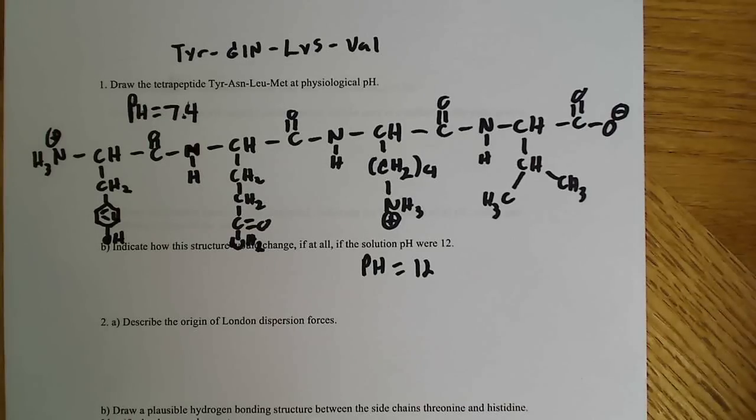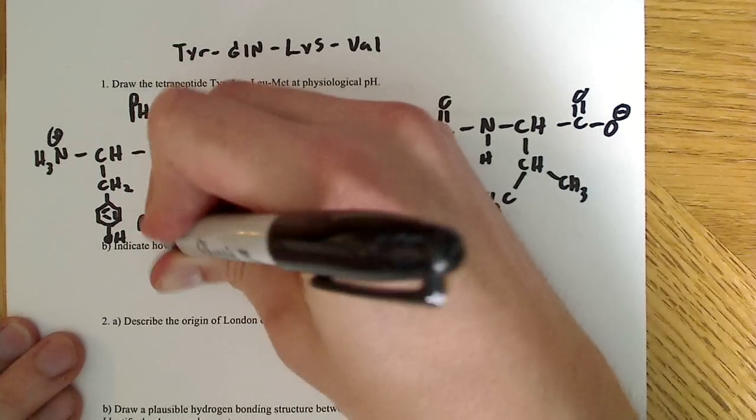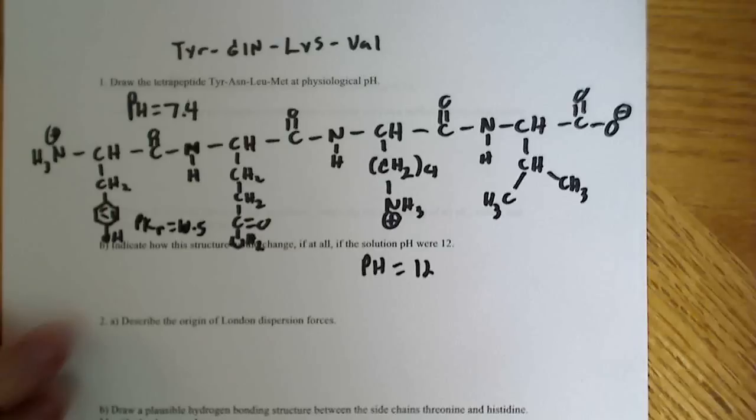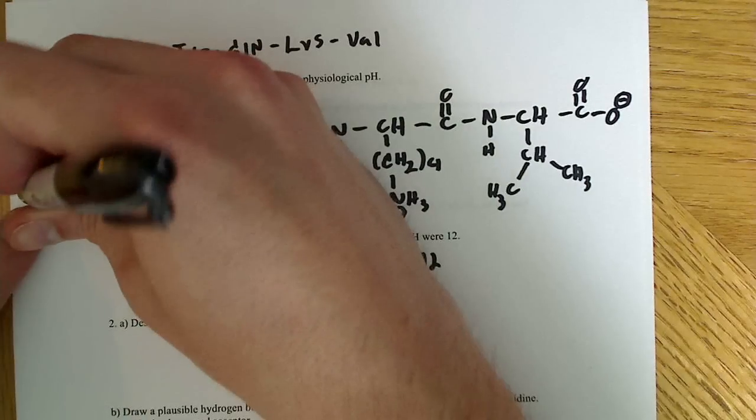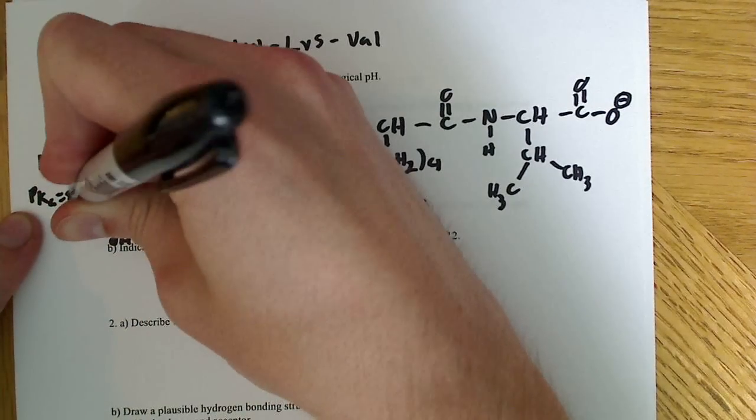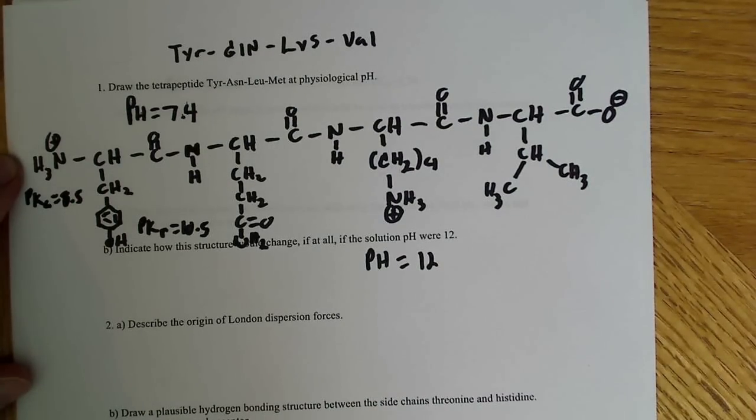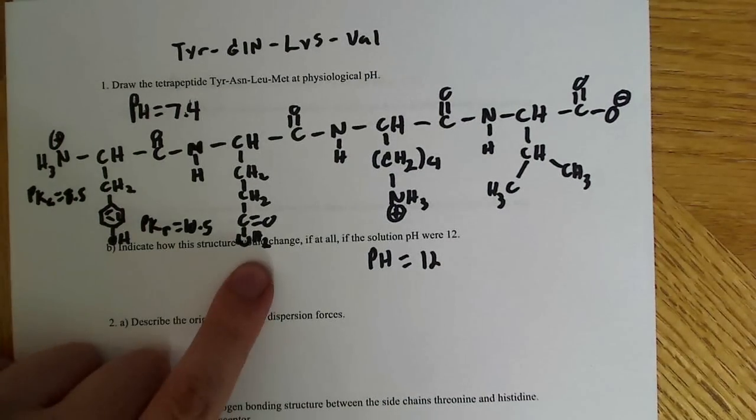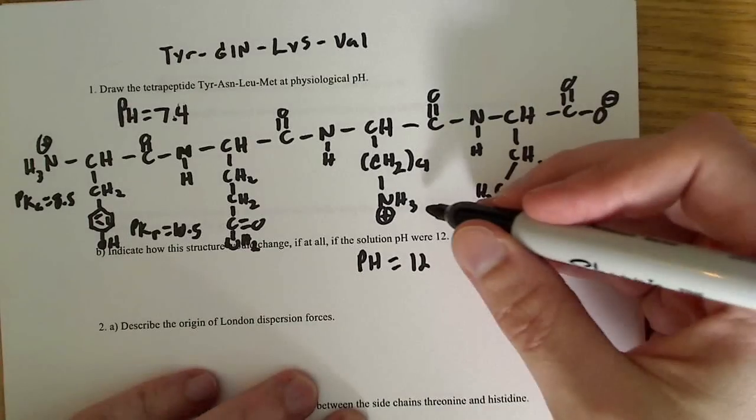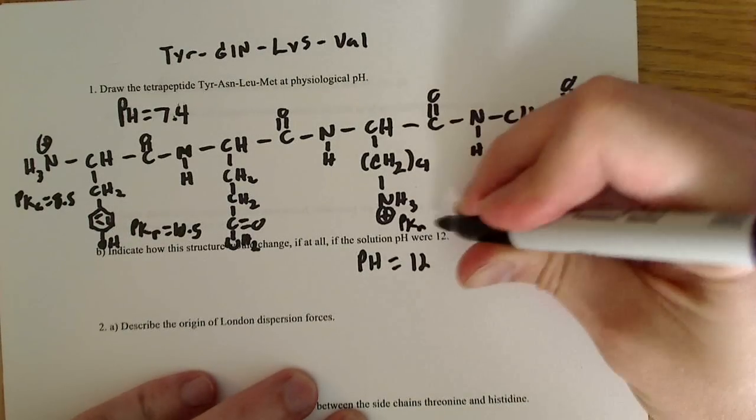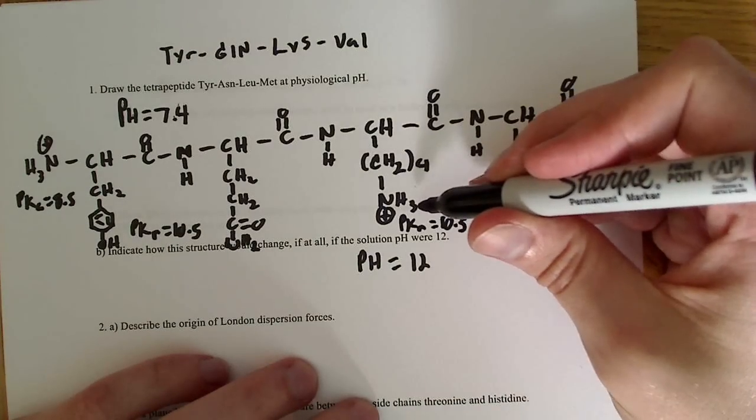Well, I'm not going to redraw the whole thing, I'm just going to briefly explain what would happen. Remember that the tyrosine over here has a pKa of about 8.5, so this would wind up being NH2, and not NH3, would no longer have the positive charge. Nothing would happen with glutamine here, that's an NH2 on the end. With lysine, again, that's a pKa of about 10.5, so that would also lose the proton and become neutral.